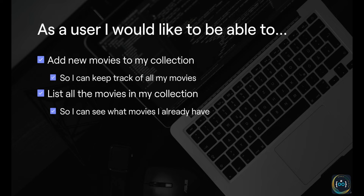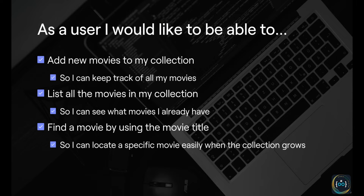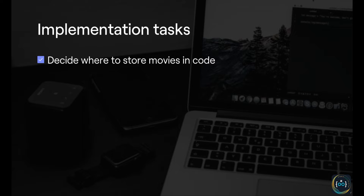Finally, as a user, I'd like to be able to find a movie by using the movie title so that I can locate a specific movie easily when the collection grows. These user stories don't define the implementation — whether you should use databases, lists, and so forth. They just say that a user would like to be able to do these things. First, we have to decide where we're going to store movies in the code.